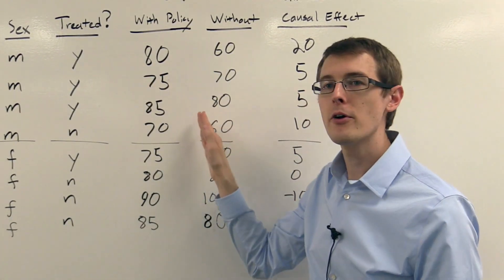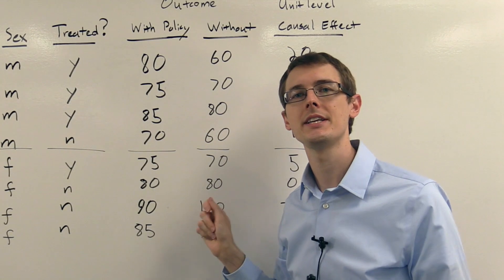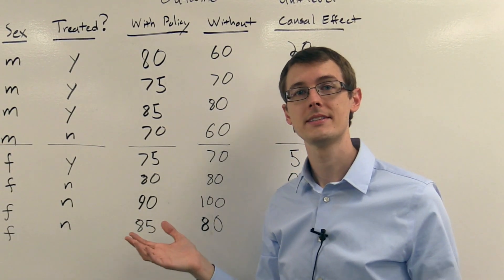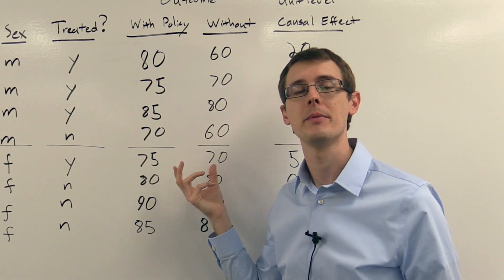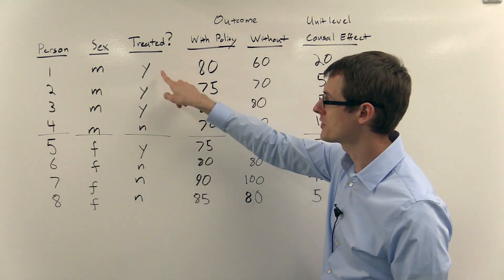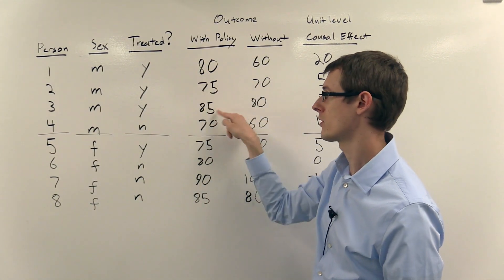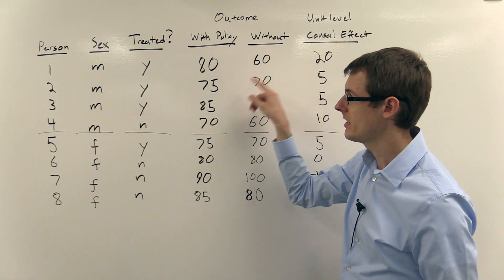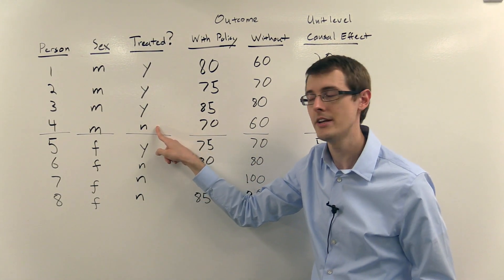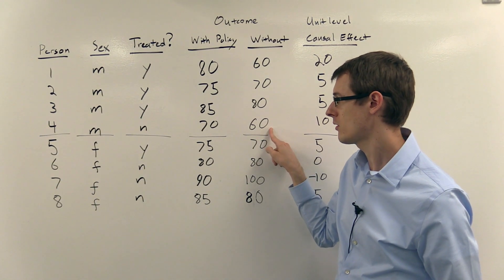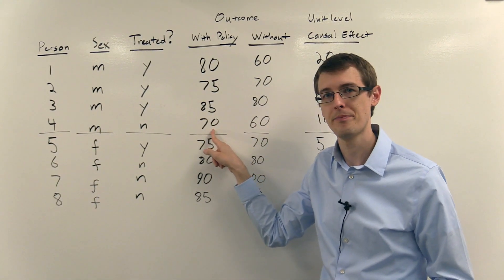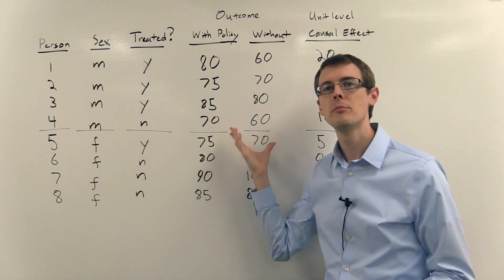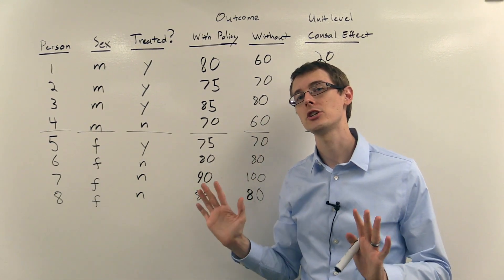Now we're never ever going to see both of these numbers simultaneously for the same person in a data set. That's the fundamental problem of causal inference, is that you can't observe the counterfactual outcome, what didn't happen. So in real data, for these people we would only ever observe this number, what happened to them when they were treated, because they were treated. We would not observe these numbers. For this person, this person was not treated, so we would observe this number, what happens to them when they're not treated, but not this number. But for the purpose of defining what effect we want to go for, I've just written out the full potential outcomes, even though we can't actually observe them in the data.